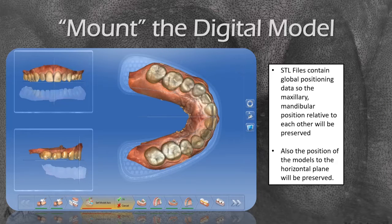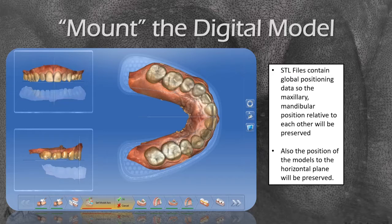This part is very, very important — this is our setting of the model axis. What you see on screen is for a ProSomnus device with a protrusive record and a 5mm opening. The most important thing is your STL model will contain global positioning data that will orient your models to a virtual horizontal plane. Making sure we mount our models correctly in this screen will give us the easiest import into the next software.